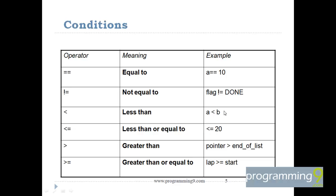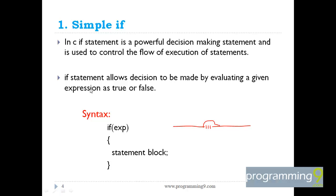Some examples of conditions are: a equals 10, flag not equals done, a less than b, some value less than or equal to 20, lap greater than or equal to start, etc. These conditions are generally formed with operators: equal to, not equal to, less than, less than or equal to, greater than, greater than or equal to. You have to place these conditions in the expression.